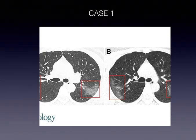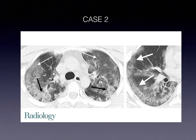Another case published in RSNA shows peripheral ground glass opacities involving bilateral lung fields — right and left — predominantly involving the peripheral zones without any sparing of the subpleural regions. Another case shows extensive bilateral ground glass opacities with few areas of air bronchograms, and consolidation predominantly bilateral, symmetrical, peripheral, also involving the subpleural regions.